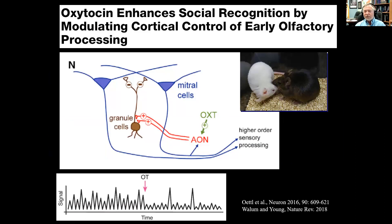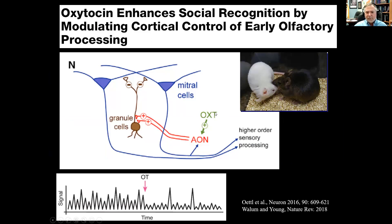So what does oxytocin really do? If you Google oxytocin, you'll see it's called the love hormone, the cuddle hormone, or even the moral molecule. But I want to convince you of something different today: that oxytocin is really about enhancing the salience and reinforcing value of social stimuli — about enhancing the processing of social information. Many years ago, when we first started studying oxytocin knockout mice, we found that they have social amnesia — they can't remember other mice they've met before.